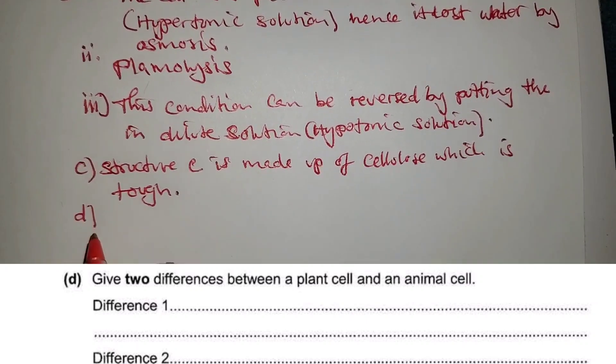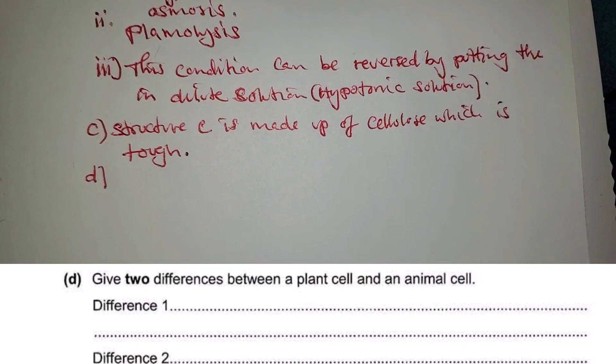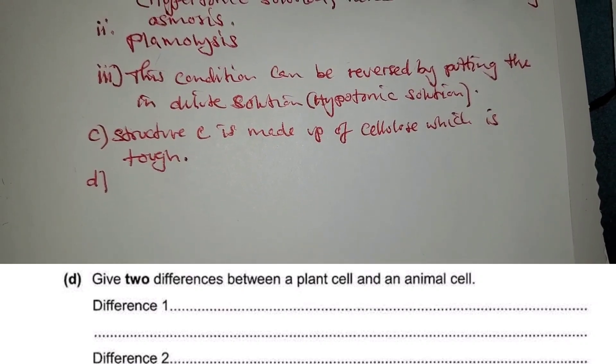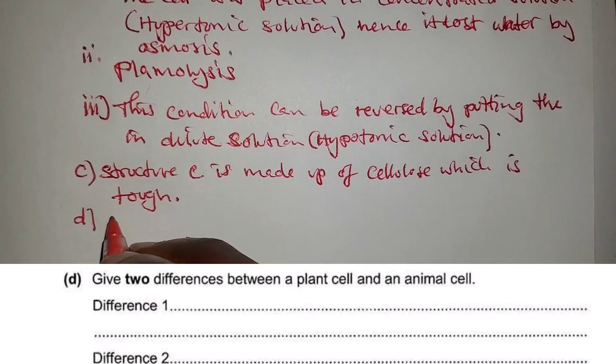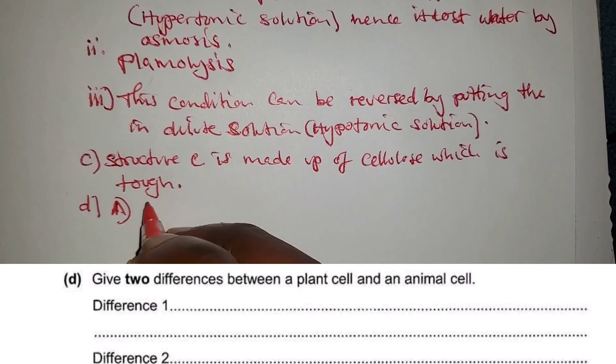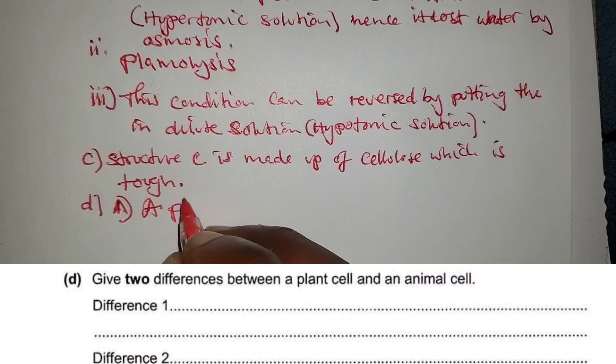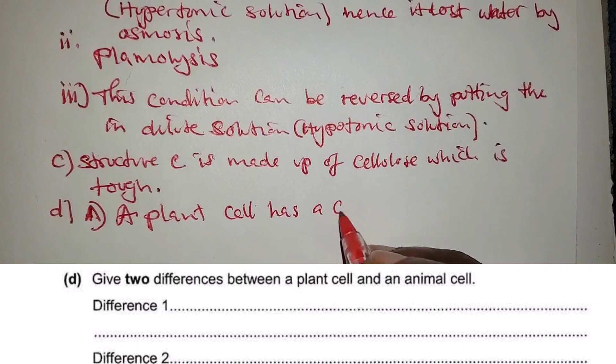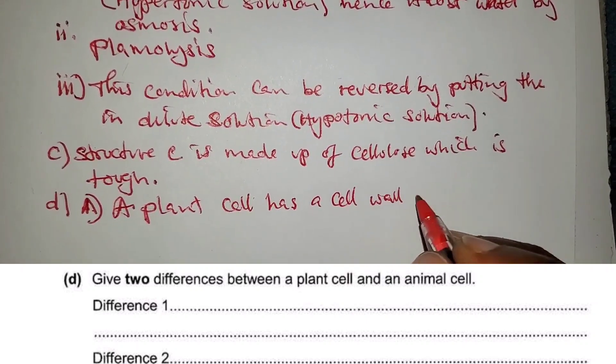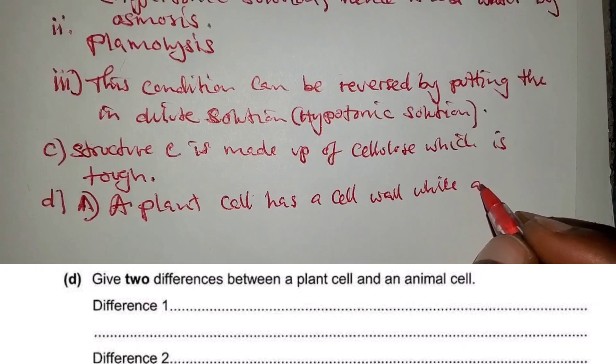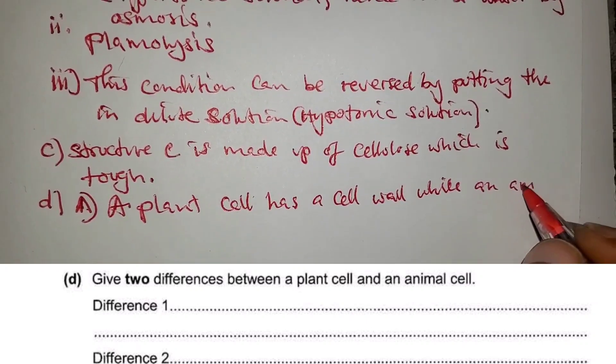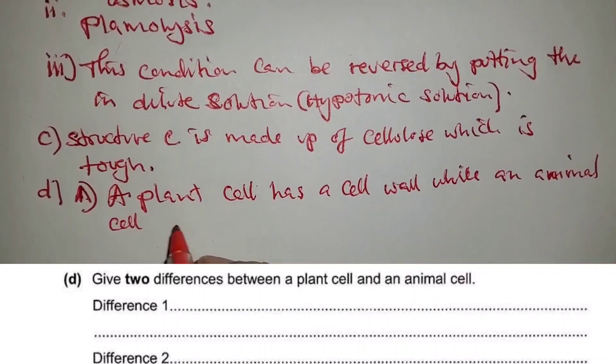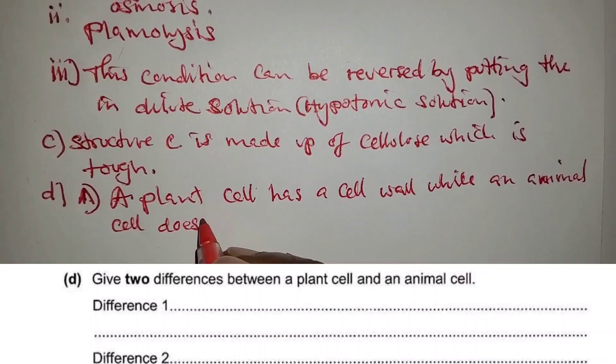Question D asks to give two differences between a plant cell and an animal cell. Difference number one: a plant cell has a cell wall while an animal cell doesn't have a cell wall.